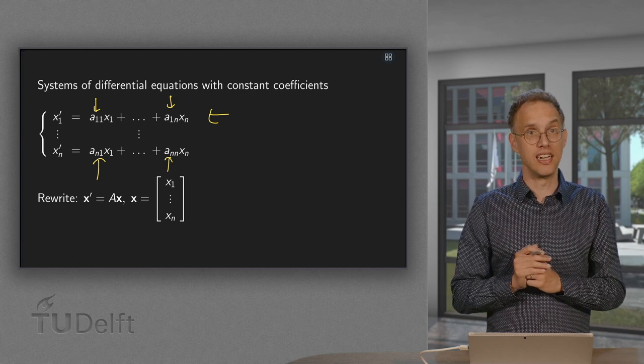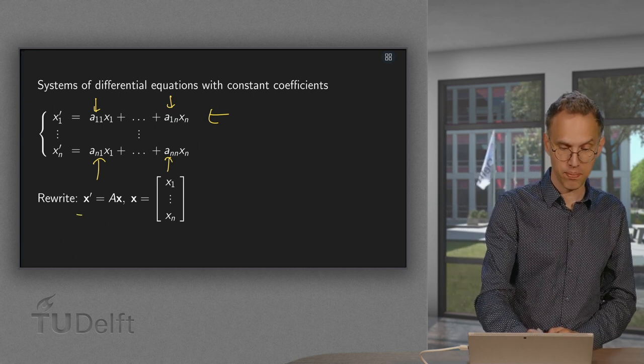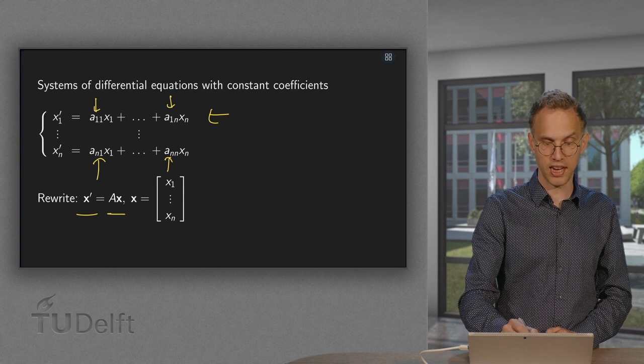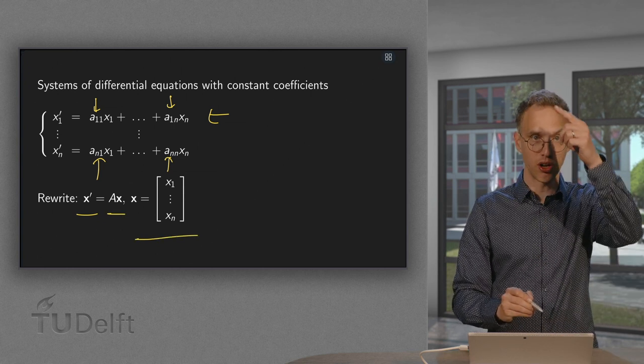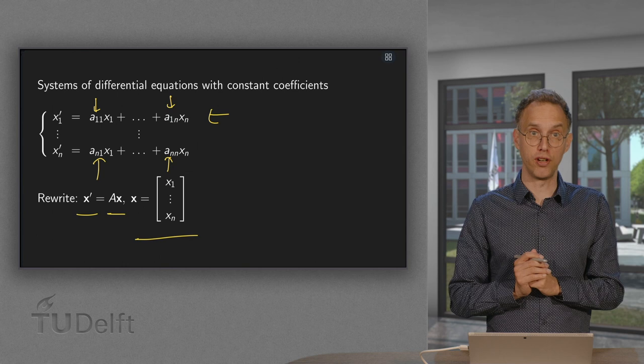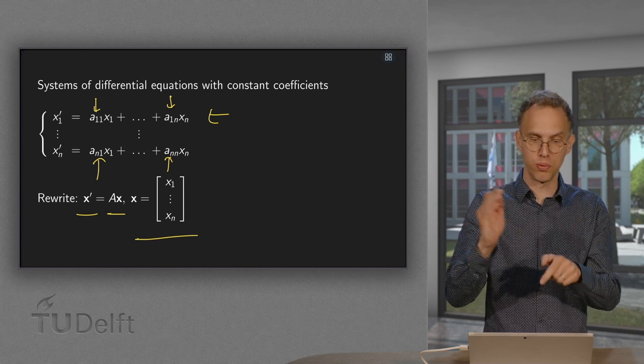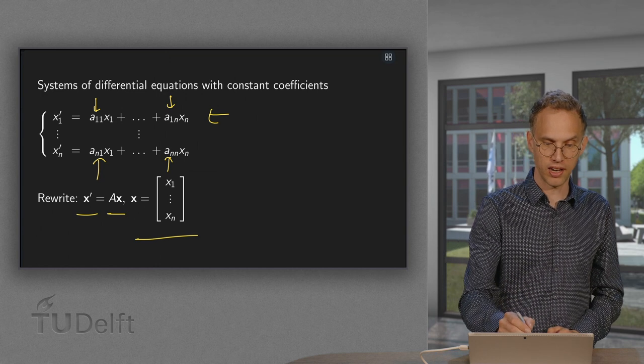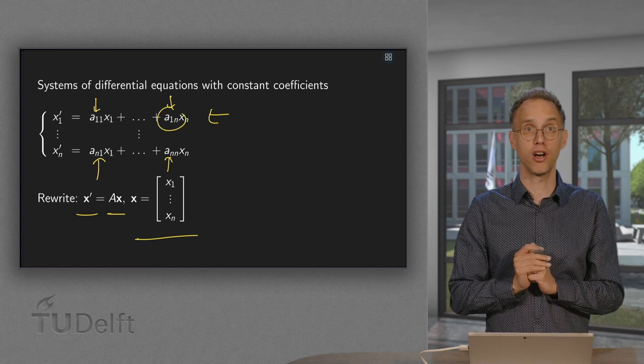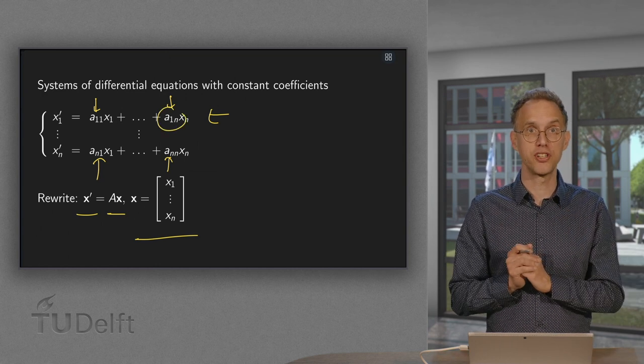So we know we can rewrite this as x prime equals some matrix times x, where x contains all our unknown functions. And the matrix A is given by A11, A12 up to A1n, which is already signaled by this notation we used over here. Now we have several cases.